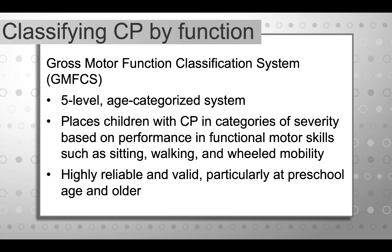The Gross Motor Function Classification System was developed some years ago and really categorizes children with CP based on their functional movement. There are five levels: level one is the least involved and level five is the most involved or most severe. This tool has been highly studied and is very reliable and valid, particularly at school age and older. And most importantly, it's stable over time.